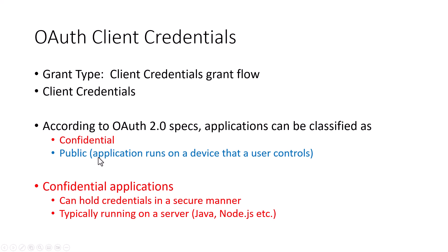Public applications run on devices that a user controls — for example, a single page application that runs on your browser, or an application that runs on your mobile device. These public applications cannot have a secret, because if you have a single page application built with SAPUI5, you can easily go into the sources, put a breakpoint, see what is happening behind the scenes, and look at the JavaScript code. Even on a mobile application, maybe it's not as straightforward, but you still have access to the code.